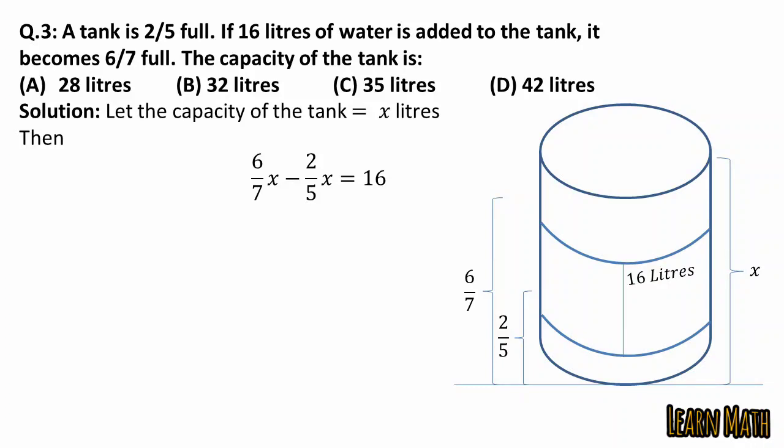Simplify by taking the LCM. We get 30x/35 minus 14x/35 equals 16, so 16x/35 equals 16. Cancelling 16 with 16, we get x equals 35. So the capacity of the tank is 35 liters, and the correct option is option C.